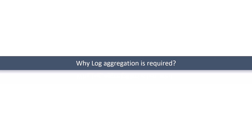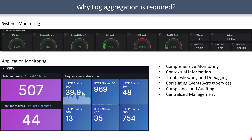Why is log aggregation even required? What you see on the screen is a typical dashboard created with the combination of Prometheus and Grafana. For system monitoring, you monitor things like CPU load, system load, RAM usage percentage, swap usage percentage, and file system consumption. But ask yourself: is it enough? For example, if CPU utilization is 80% or RAM utilization has been above 90% for the last 10 minutes, it tells us about the problem but not the detail behind it.